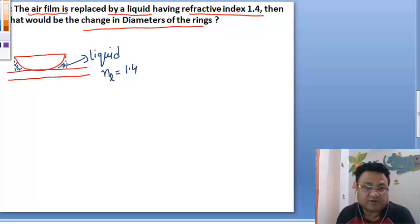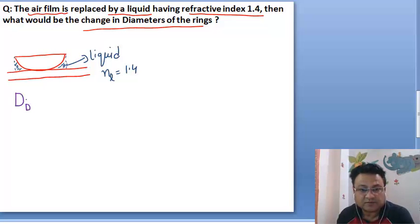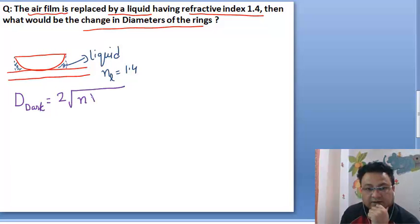What are the formulas that we know? The diameter of dark ring is twice under root of n lambda R.